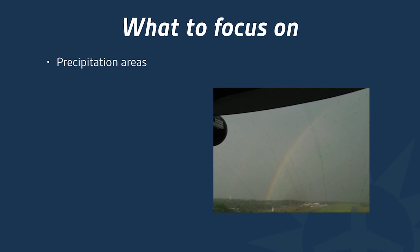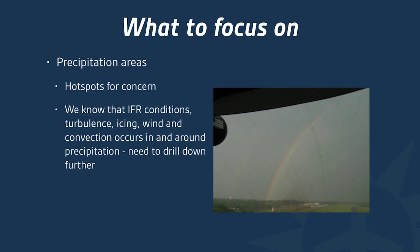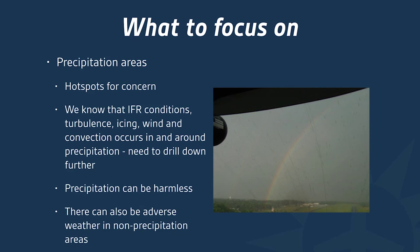I spend a lot of time focusing on precipitation areas, especially when looking at forecasts several days out, because they represent hotspots for concern. IFR conditions, turbulence, icing, wind, and convection all tend to occur in and around areas of precipitation — red flags along our route of flight. Precipitation can sometimes be harmless, but most of the time it can be pretty nasty. There can also be adverse weather in areas where no precipitation is expected, so we can't become complacent.